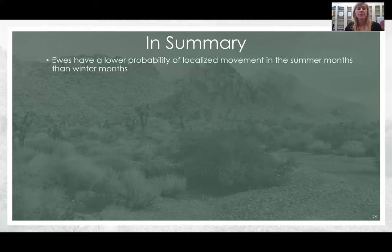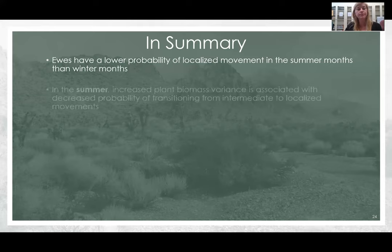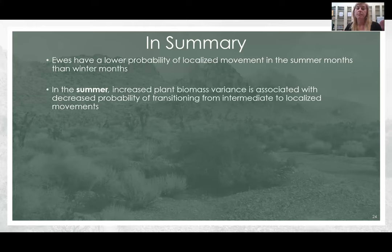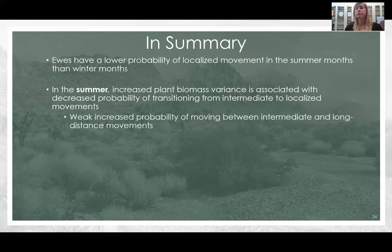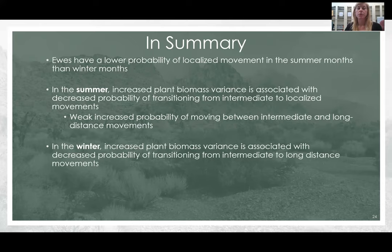In summary, we found that ewes have a lower probability of localized movements in the summer months than in the winter months, which was the opposite of what we predicted. In the summer, increased plant biomass variance is associated with a decreased probability of transitioning from intermediate to localized movements — again the opposite of our prediction. We found a weak increased probability of moving back and forth between intermediate and long-distance movements, but not a significant trend. In the winter, increased plant biomass variance is associated with a decreased probability of transitioning from intermediate to long distance, which was consistent with our hypotheses.